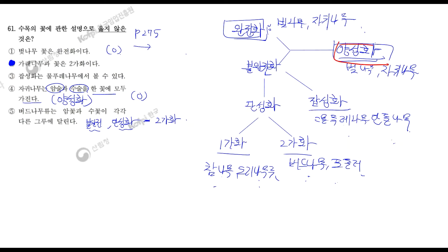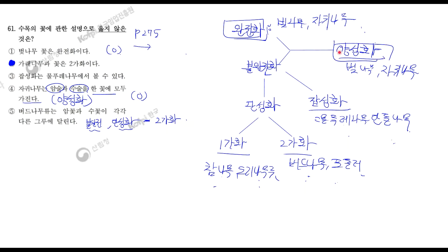양성화는 뭐냐? 양성화는 암술과 수술을 모두 가지고 있는 형태를 보고 양성화라고 합니다. 양성화에서 암술과 수술을 모두 가지면서 꽃잎, 꽃받침이 있으면 완전화에 들어가고요. 암술, 수술을 가지고 있으면서도 꽃잎, 꽃받침이 없는 형태를 보고 불안전화로 됩니다. 즉, 양성화는 형태를 자세히 봐서 완전화인지 불안전화인지 구분하셔야 됩니다. 그러나 단성화, 잡성화, 1가화와 2가화는 모두 불안전화에 들어간다고 이해하시면 좋겠어요.